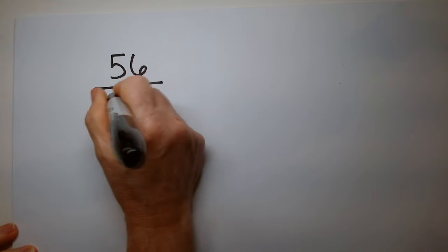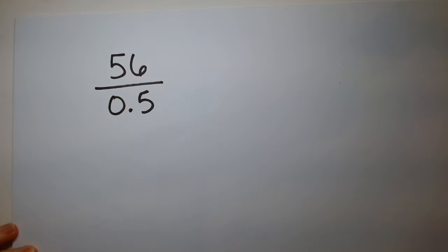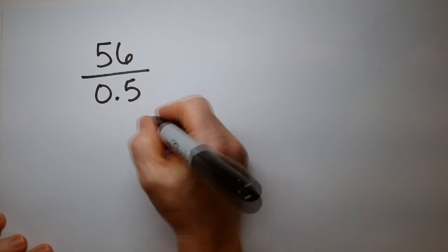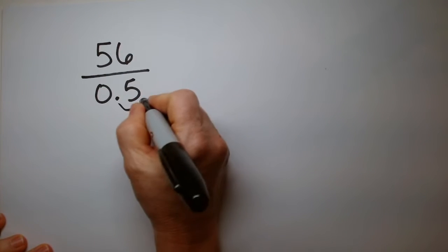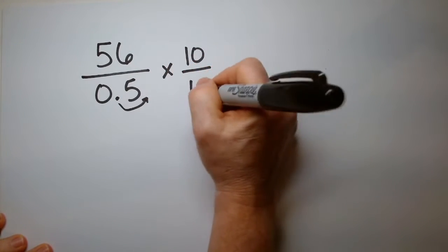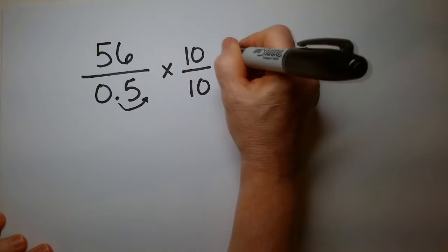56 divided by 0.5. How do I do that problem? I'm going to multiply by whatever I need to get the decimal point out of this number. So that's going to be 10. And whatever I multiply the bottom by, I've got to do the same to the top.